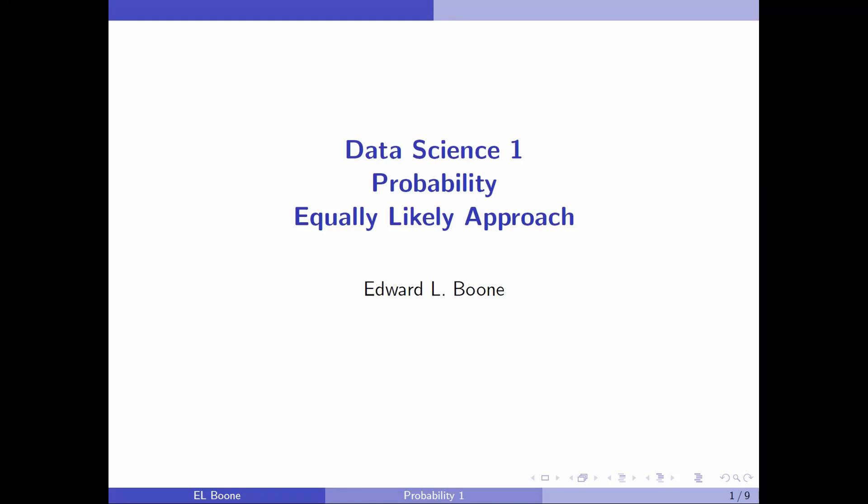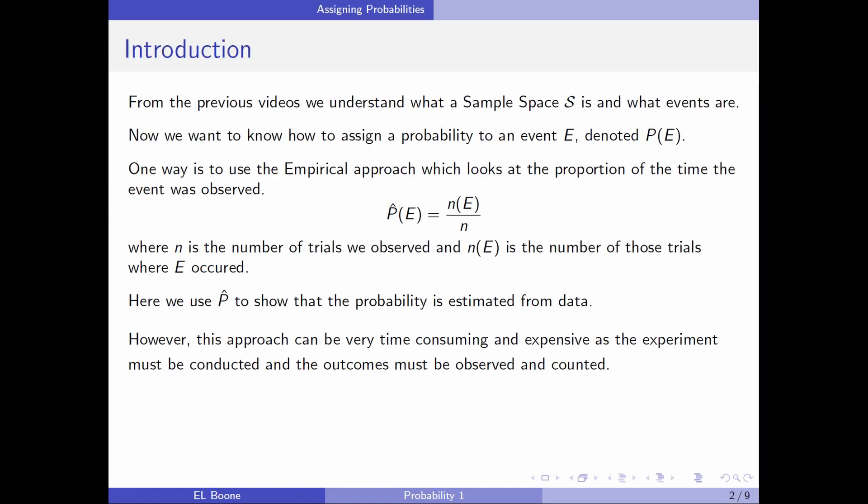Welcome to Data Science 1, Probability Equally Likely Approach. So you remember from the previous videos that we've talked about what a sample space and events are. These are the outcomes that can occur, all the outcomes are in S, and the events are combinations of outcomes. We've denoted the probability of an event by P of E.